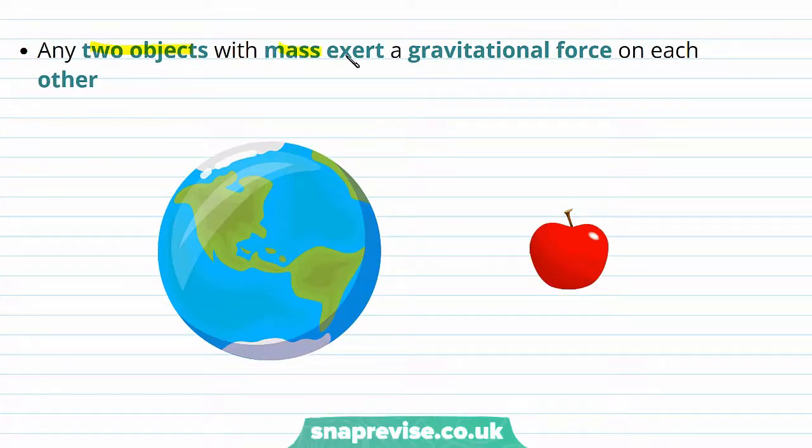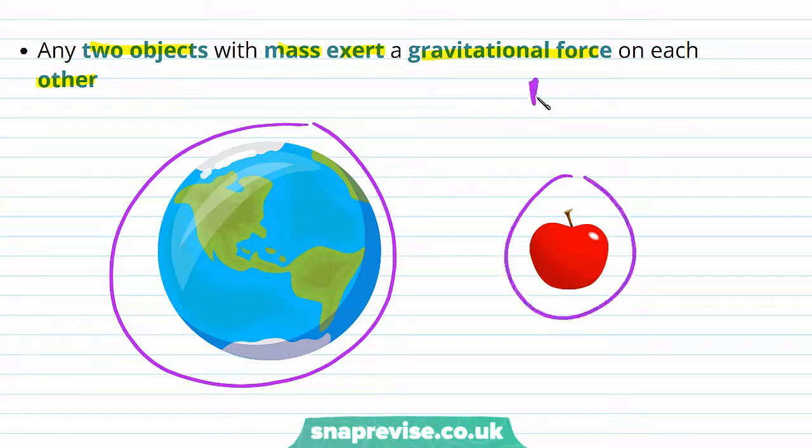Any two objects with mass exert a gravitational force on each other. So because both the Earth and this apple have mass, they exert this gravitational force on each other.